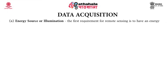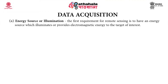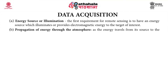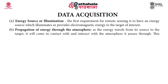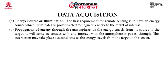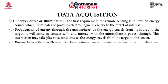The first requirement is an energy source or illumination. It is the first requirement for remote sensing to have an energy source which illuminates or provides electromagnetic energy to the target of interest. The most common is solar energy, which has a wide range of spectrum and can be used for remote sensing studies. The second step is propagation of energy through the atmosphere.